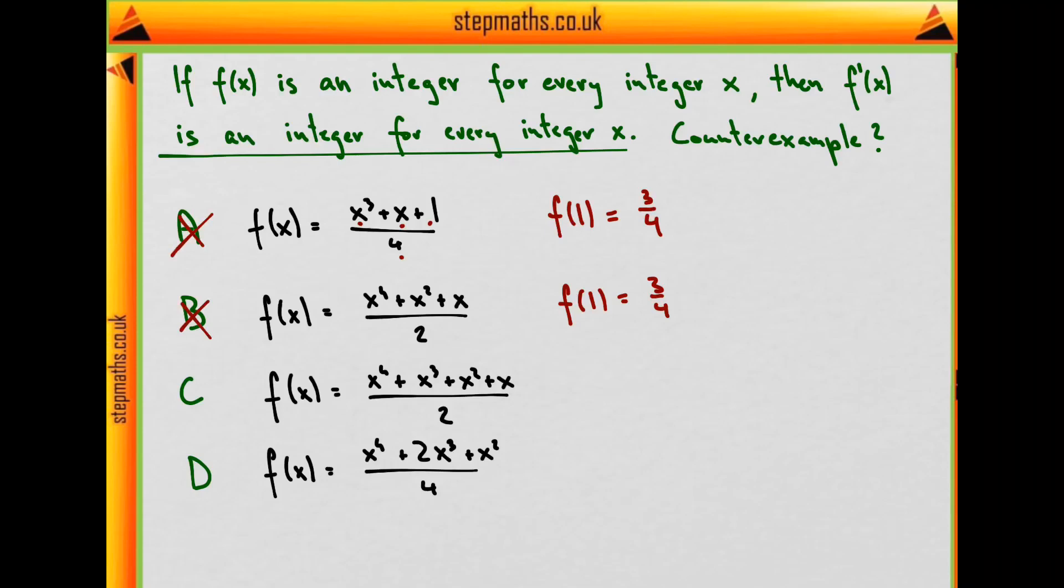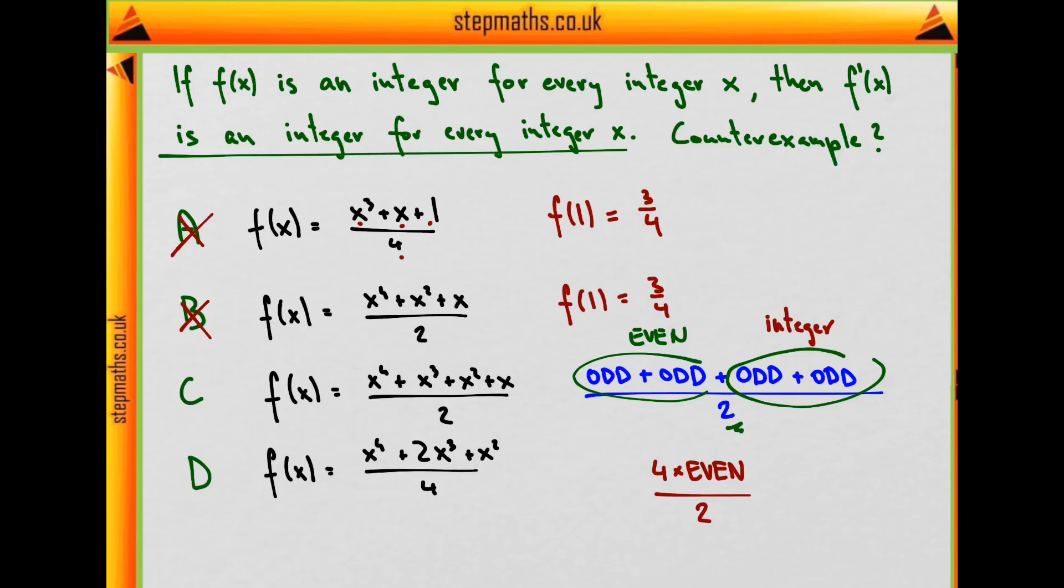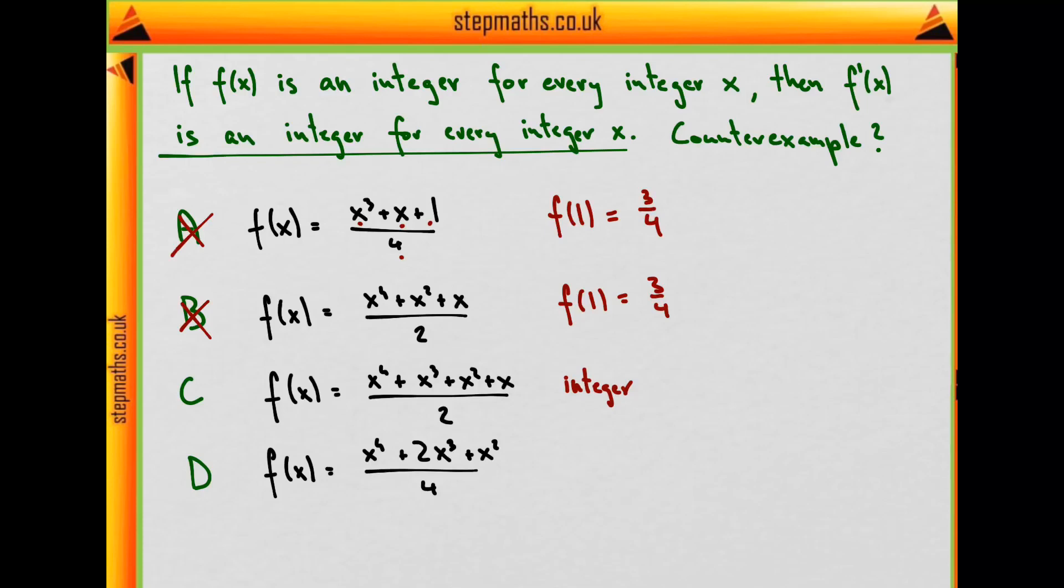How about C? Imagine x is odd. If x is odd, then all of its powers will be odd. We get odd plus odd plus odd plus odd. But two odd numbers combine to make even, and even plus even is again even. An even number divided by 2 is always an integer. Should x be even, we just get the sum of four even numbers, which is even, divided by 2, and we get an integer once again. So this function in C is an integer for every integer x.